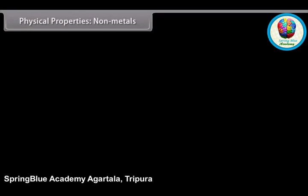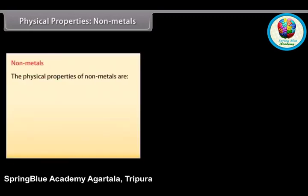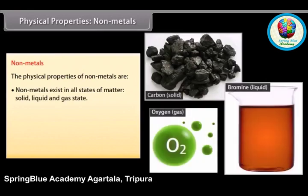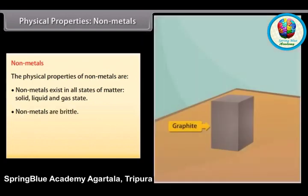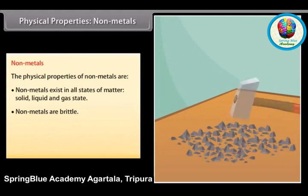Physical properties — Non-metals. Non-metals exist as solids, liquids, or gases at room temperature. For example, gases: oxygen, chlorine, fluorine; liquid: bromine; and solid: carbon. Non-metals are non-malleable and non-ductile — they are brittle and cannot be rolled into wires or beaten into sheets.